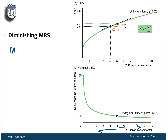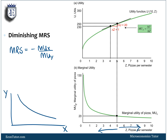The MRS equals negative MUX over MUY. On an indifference curve, as you move toward having more X, MUX goes down and — since you're getting less Y — MUY goes up. So this fraction goes down, which means the MRS, the slope of the indifference curve, goes down. We can see it's high and getting smaller and smaller, and this diminishing MRS is what gives us convexity.